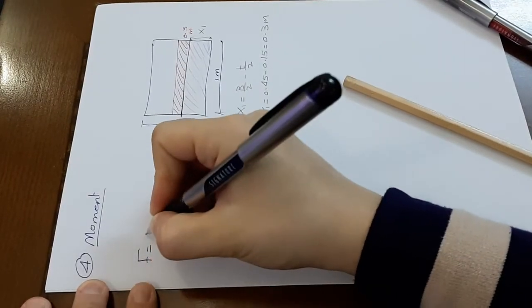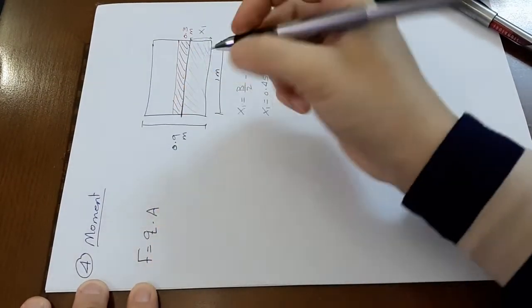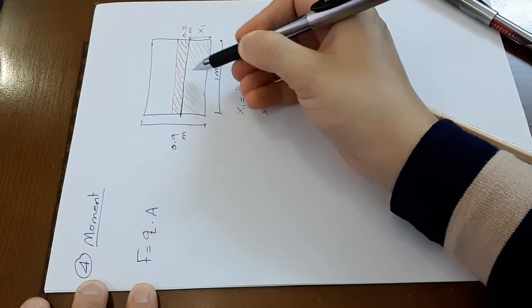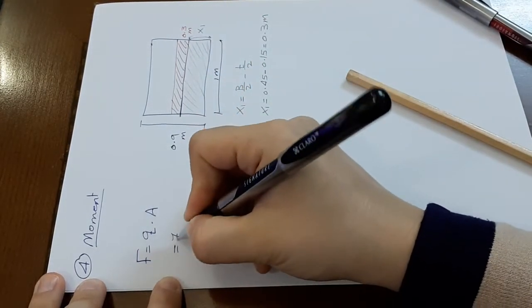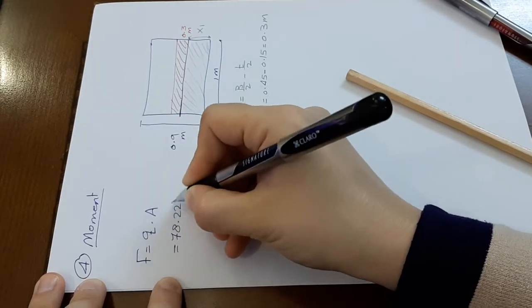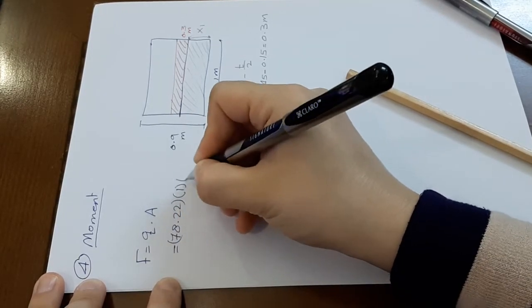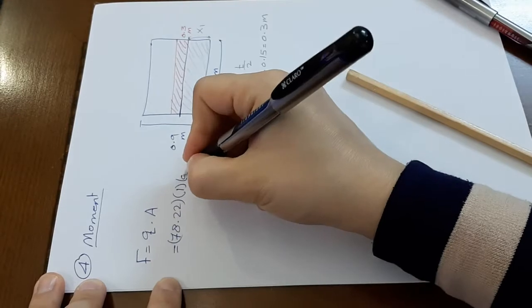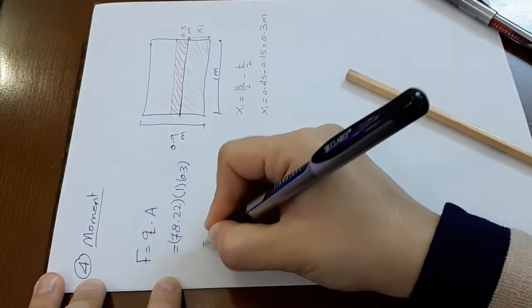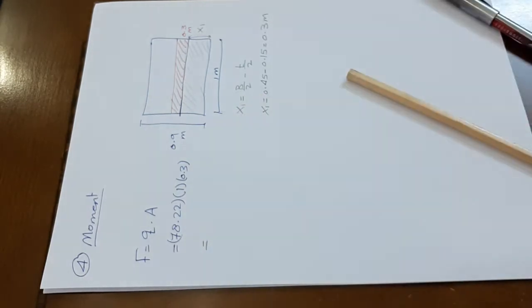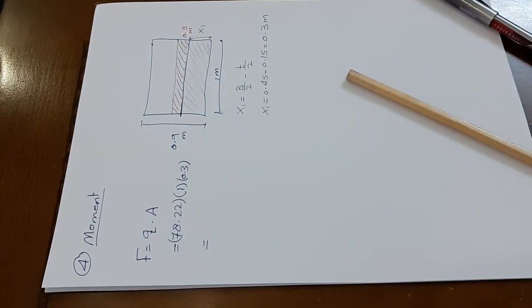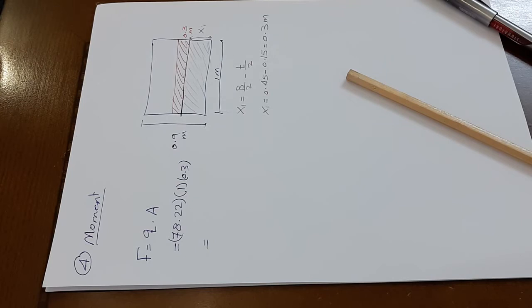Force equals q times A, where A is the shaded area. Force equals 78.22 times area (1 times x1, which is 0.3). So the force equals 78.22 times 0.3, which is 23.47 kN.